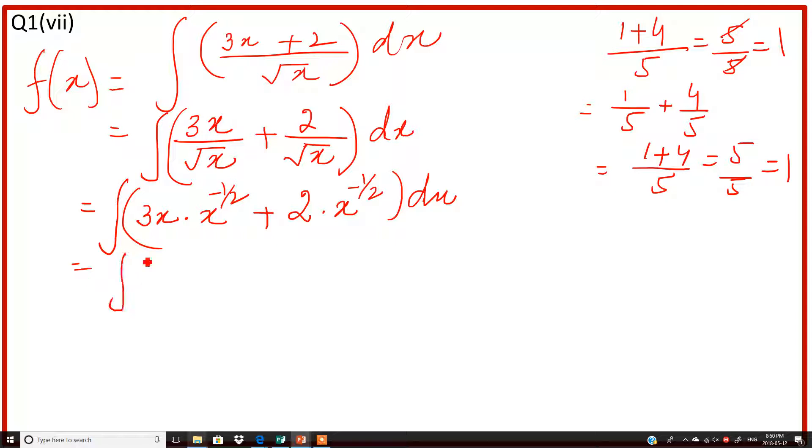Now this is x, this is x, we will add the powers. So this has 1 power, this is half, so it will be positive 3 over 2, and it will remain the same dx.